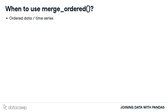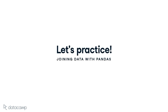You might think about using the Merge Ordered method instead of the regular merge method when you are working with ordered or timed series data, like in our example. Additionally, the fill forward feature is useful for handling missing data, as most machine learning algorithms require that there are no missing values. Time to practice using the method and add it to your toolbox.